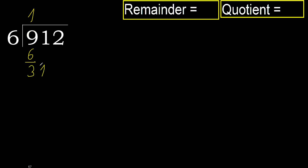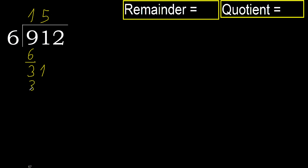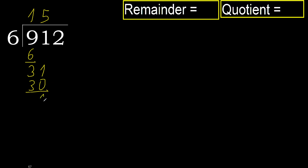Next, bring down: 31. 6 multiplied by 6 is 36 — that is greater. Multiply by 5: 30 is not greater. Subtract: 31 minus 30 equals 1.